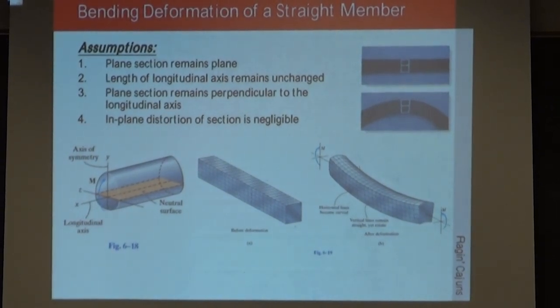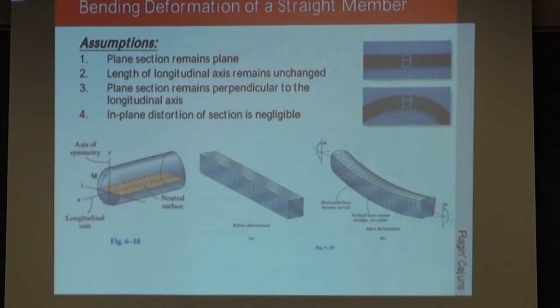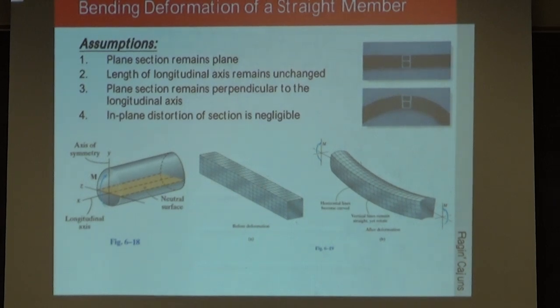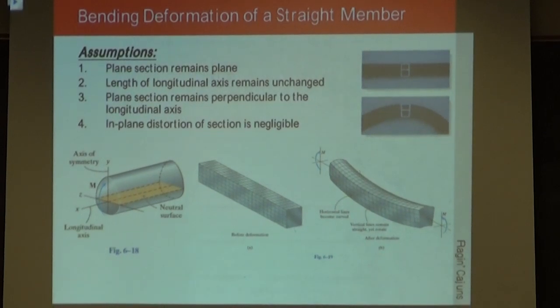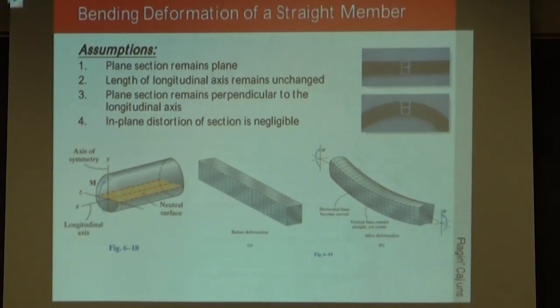When dealing with bending, we have to make some assumptions. The assumptions here are that the plane section remains plane, so the cross section remains plane. The length of the longitudinal axis remains unchanged. The plane section remains perpendicular to the longitudinal axis, and the in-plane distortion of the section is negligible.